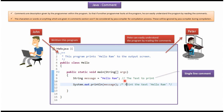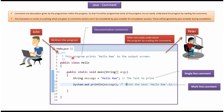A comment that starts with double slash (//) is called a single-line comment. A comment that starts with slash-star (/*) and ends with star-slash (*/) is called a multi-line comment. And a comment that starts with slash double-star (/**) and ends with star-slash (*/) is called a documentation comment.